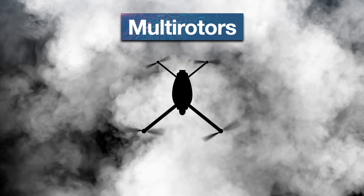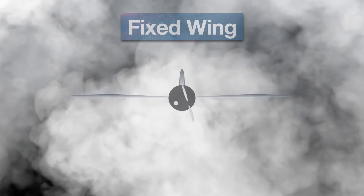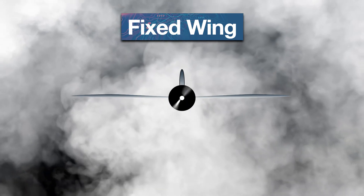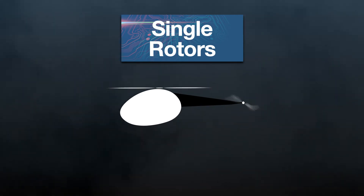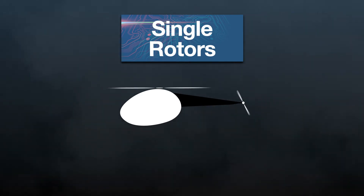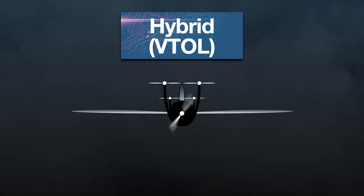Types of drones can be classified on the basis of their functionality. We have the multi-rotors with more than one rotor, fixed wings that look like an aircraft, and single rotors which resemble helicopters. We also have the hybrid VTOLs — vertical takeoff and landing — which are a combination of multi-rotors and fixed wings.